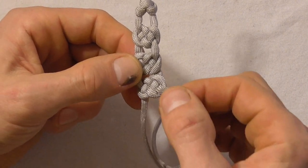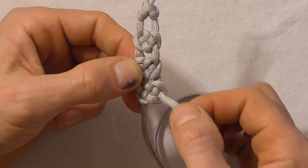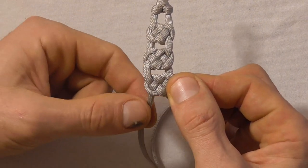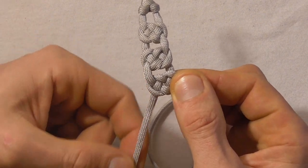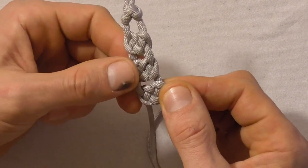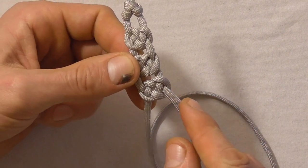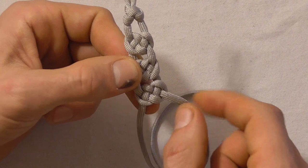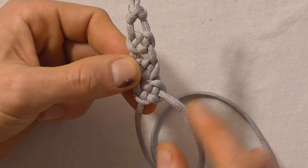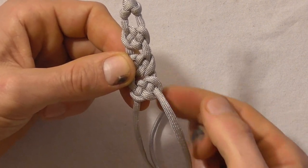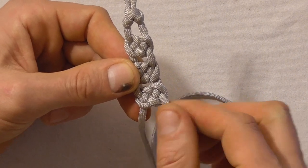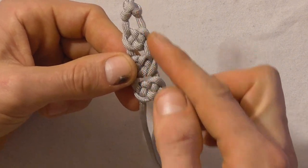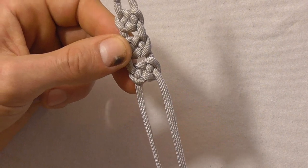And again this strand exits over. So we want to do an underhand loop on this side. So if you realize the pattern, if the strand exits above it's an underhand loop we start off with. If the strand exits underneath it's an overhand loop we start off with here. And just continue making these Josephine knots.